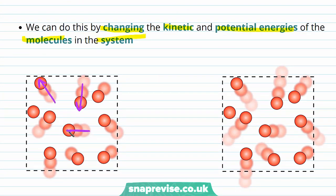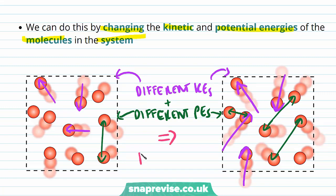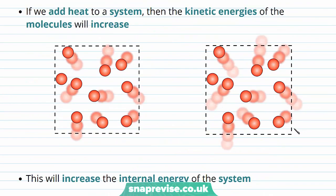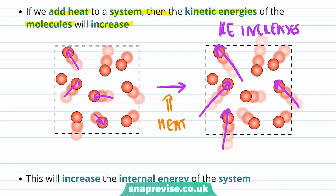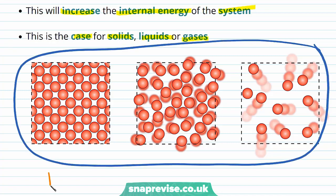For example, if we have two substances with different kinetic energies and different potential energies, they're going to have different internal energies. If we add heat to a system, the kinetic energies of the molecules will increase. For example, if we look at these two gases and we add heat to the gas, the kinetic energy of the gas is going to increase, and this will increase the internal energy of the system. This is the case for solids, liquids, or gases — so for all these states of matter, adding heat leads to more internal energy.